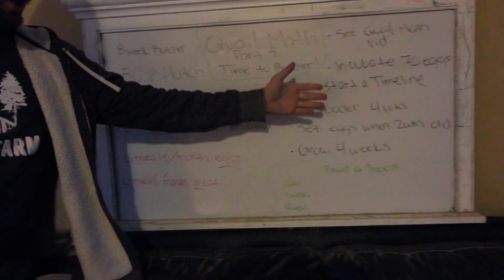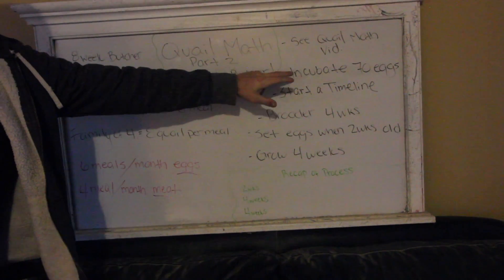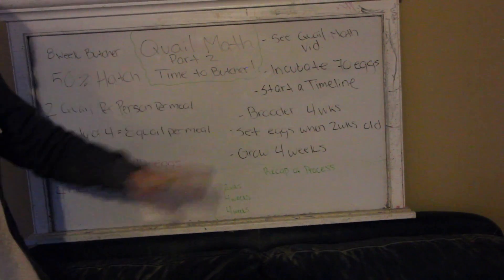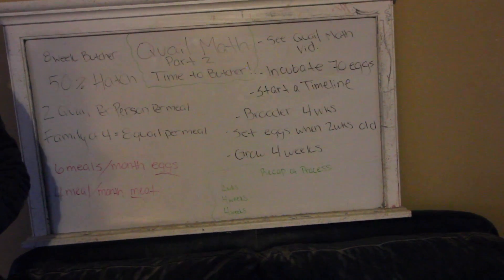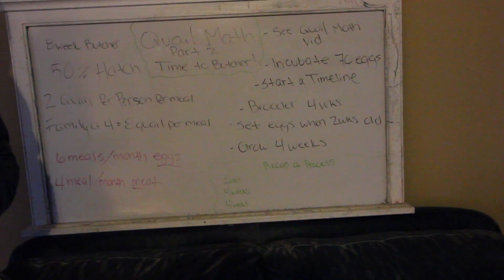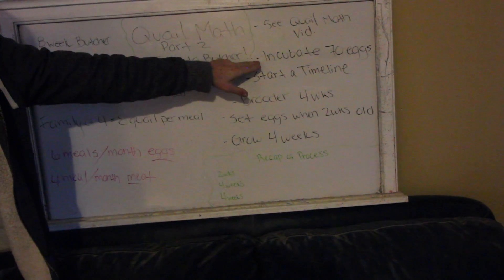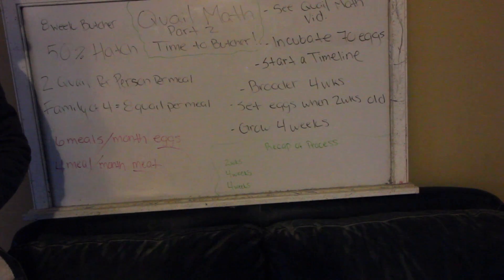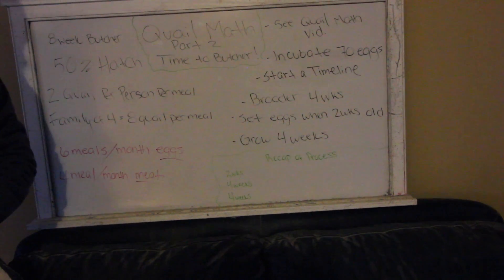We already determined you're getting 70 eggs a week. You're going to incubate those 70 eggs and then start your timeline. This is where it gets a little tricky, but it is doable. Once you get on a rhythm, you'll do just fine. So you incubate 70 eggs, and in 2 and a half weeks they hatch and go into your brooder. Assuming a 50% hatch rate, that's 35 quail.